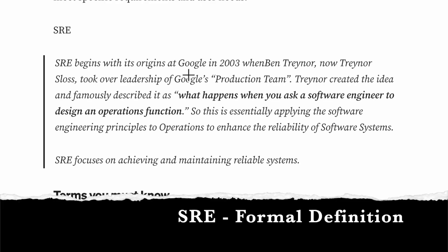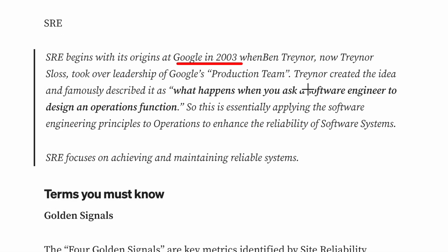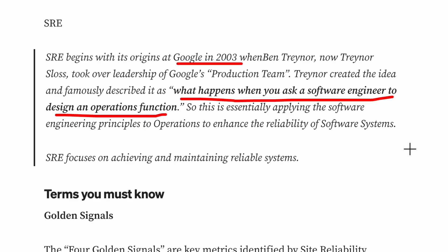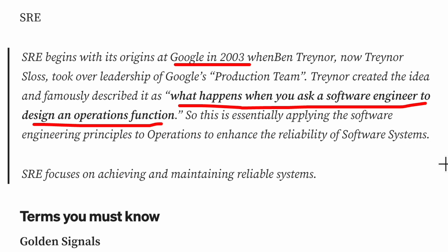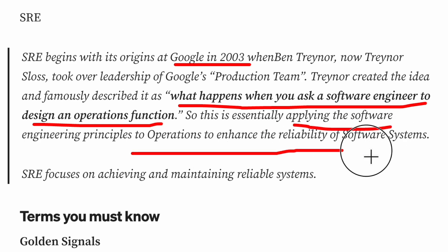SRE has its origins in Google. Its creator famously described it as what happens when you ask a software engineer to design an operations function. The operations function includes deployment, maintenance, config management and incident management — all functions after the software has been built and is in operation. So if you apply software engineering practices — automation, scripting, reducing toil — those principles of software engineering when applied to operations is called SRE. Essentially, applying software engineering principles to operations to enhance the reliability of software systems is SRE.